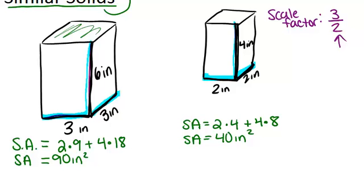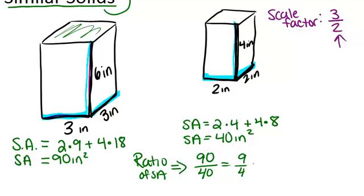So now let's look at the ratio of the surface areas. The ratio of the surface areas is 90 over 40, which is the same as 9 over 4, which is really like 3 over 2 squared. So if we go back to the scale factor, which was 3 over 2, we'll notice that the ratio of the surface areas is the scale factor squared. And that will always be the case, whether we're talking about prisms or pyramids or cones or anything else. For any similar solids, the ratio of the surface areas will always be the scale factor squared. The reason for that is surface area is a two-dimensional measurement, so it applies the scale factor twice, which is where the squared comes from.